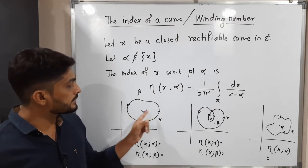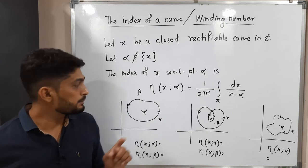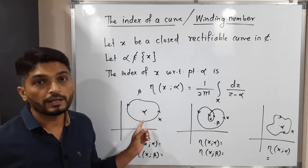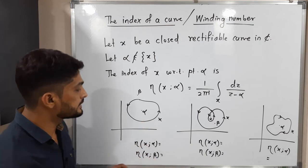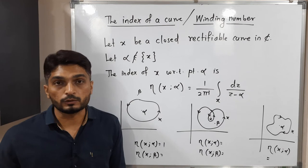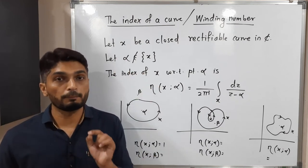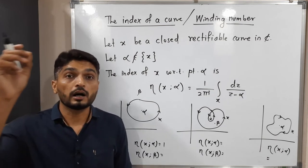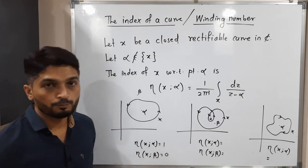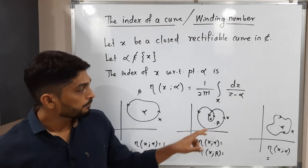Then you can easily see that x is around alpha, so that means x takes one rotation about alpha. So the winding number about alpha is one. But see, beta is lying outside the curve, so there is no rotation about beta. So the winding number will be zero.